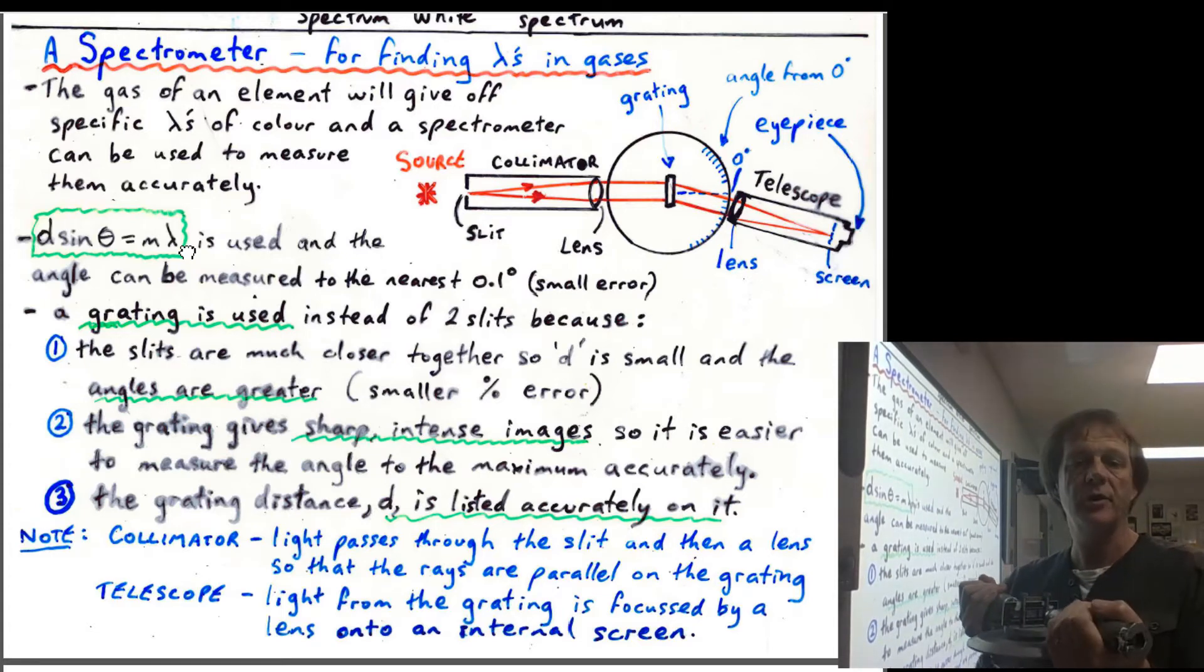That will be pointing at a light source. If you point at a white light source, you'll still get the pattern here. You'll get a central white order maximum, and then you'll get a spectrum starting from violet out to red here.